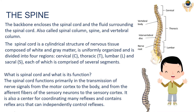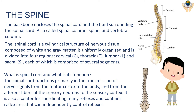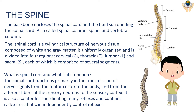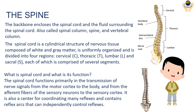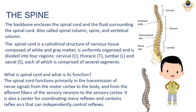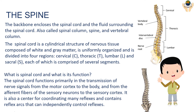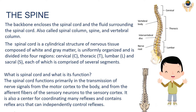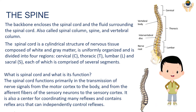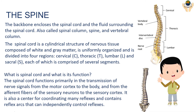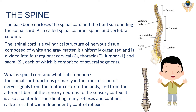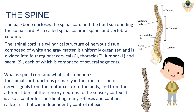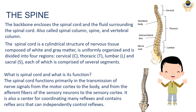The spine, also called the spinal column, vertebral column, or backbone, encloses the spinal cord and the fluid surrounding it. The spinal cord is a cylindrical structure of nervous tissue composed of white and gray matter. It is uniformly organized and divided into four regions: cervical, thoracic, lumbar, and sacral, each of which is comprised of several segments.